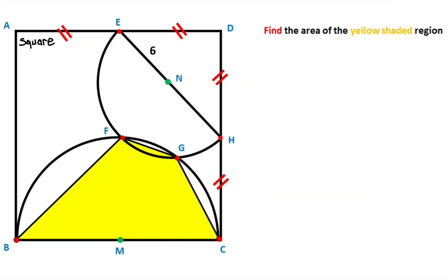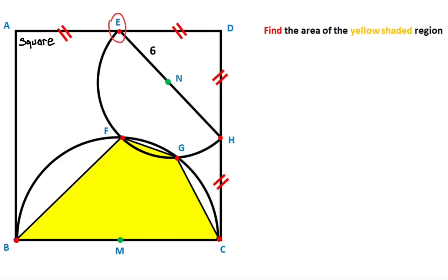Hello everyone. In this video we have one square and two semi-circles. The tangent points are given as point M and point N. The centers of the semi-circles are given as point E and point H. These are given as midpoints, and the radius of the small semi-circle is given as 6 units. The question is: what is the area of the yellow shaded region?